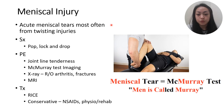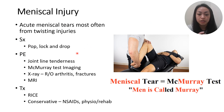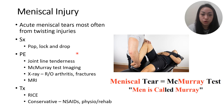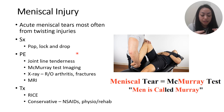Moving on to meniscal injury. Acute meniscal tears are most often caused by twisting or rotating the knee. Patients describe 'pop, lock, and drop': a pop in the knee, then it locks — they cannot fully extend the knee — and then the knee gives away. Compare this to ACL, which is 'pop and swell.' Pop, lock, and drop is for meniscal injury; pop and swell is for ACL.